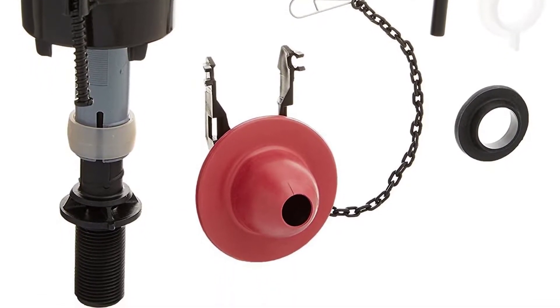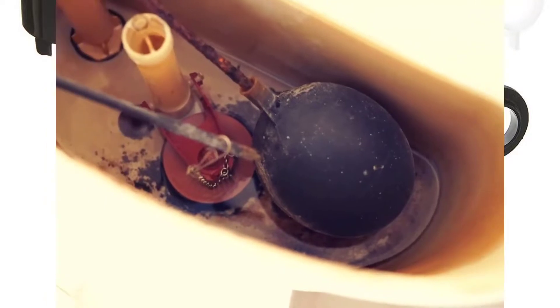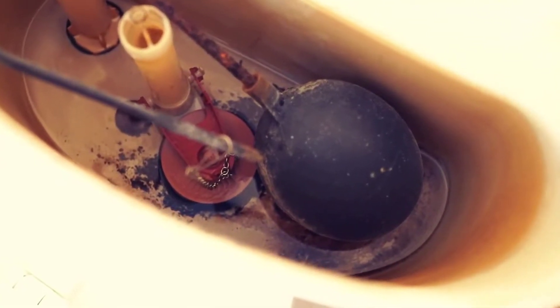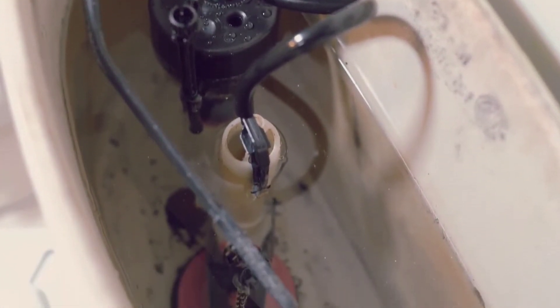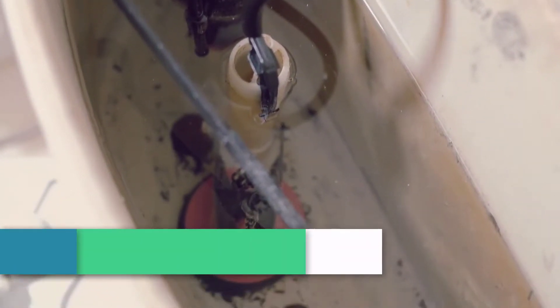400A Toilet Fill Valve adjusts easily from 9 to 14 inches, fits most 2 inches flush valve toilets, and is ideal for use in 1.6 to 3.5 gallons per flush toilets or larger. Dual flush, no.